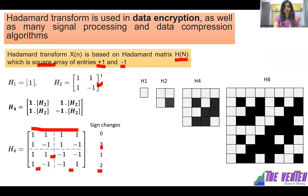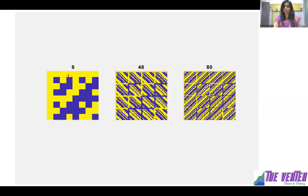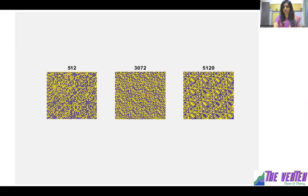If we denote +1 by white and -1 by black, then in image processing H1 will look like a single white block, H2 will look like three white and one black block (since the last entry is -1), and H4 and H8 will look accordingly. You can see H2, H4, H16, H64 and the various values of H4 shown here.